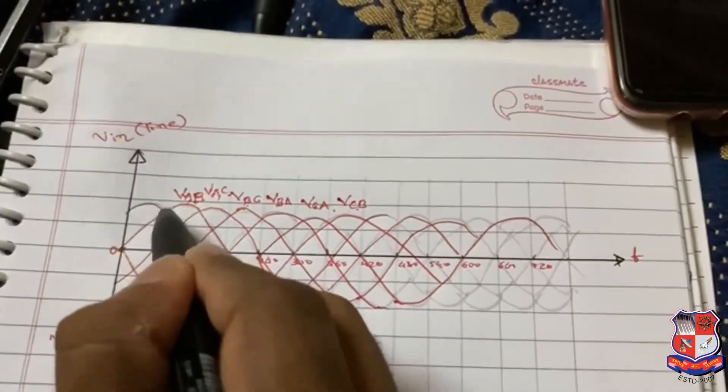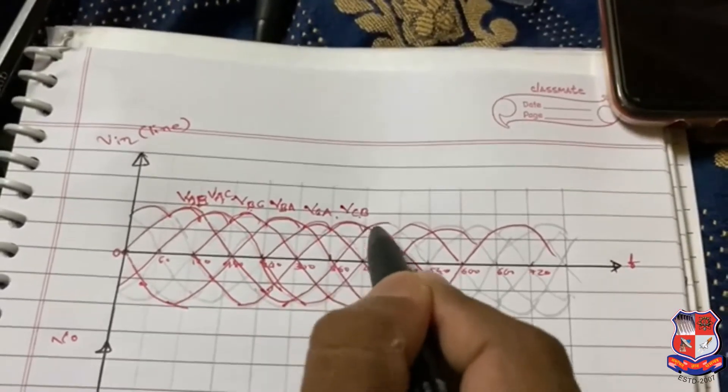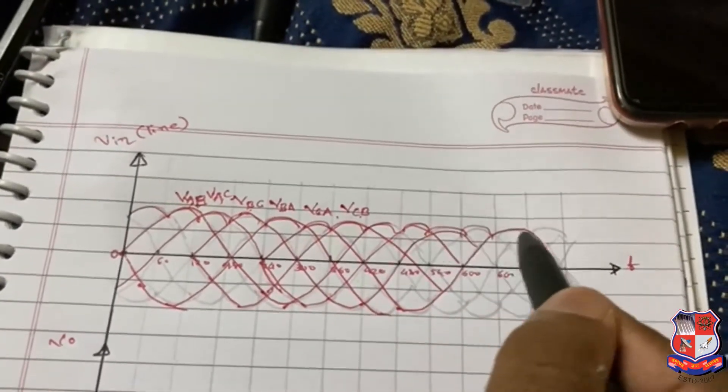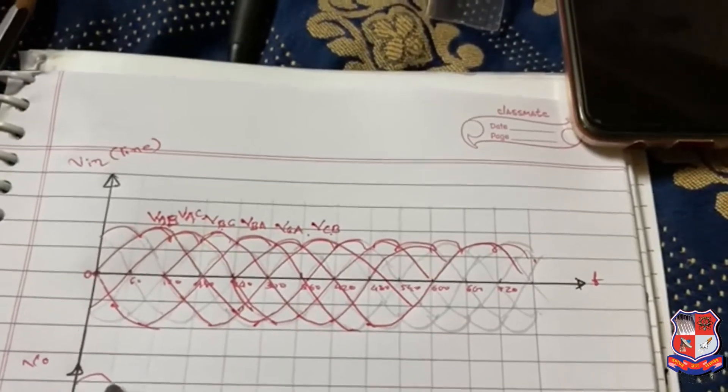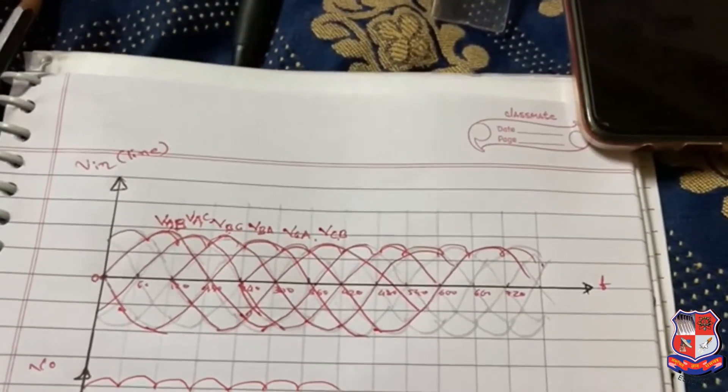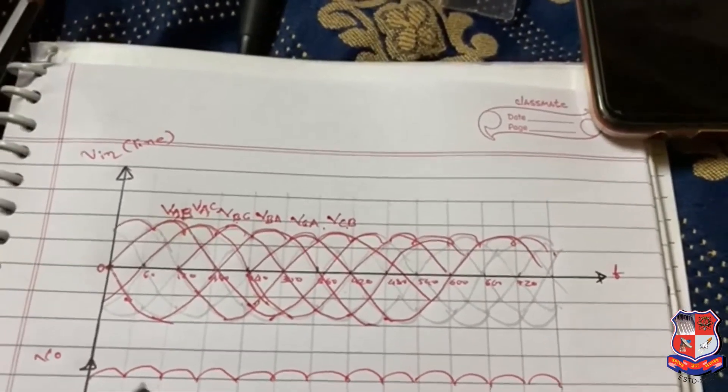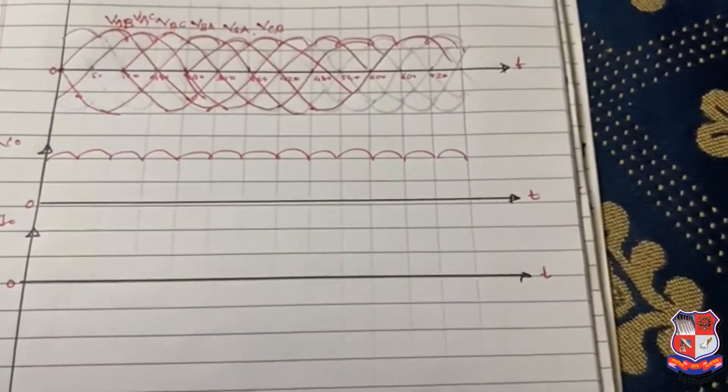Simply, our output voltage will be like this. So draw output voltage. This is our output voltage.